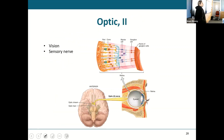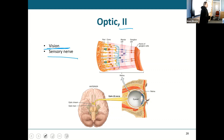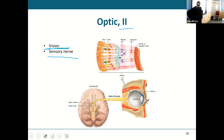The optic nerve — cranial nerve two. We all know what this one does. It is the nerve of vision, also a purely sensory nerve. We're not going to talk about it too much because we'll cover vision later in special senses.